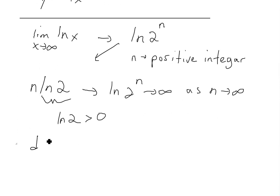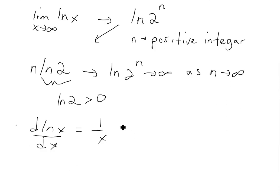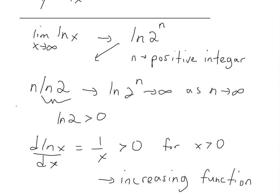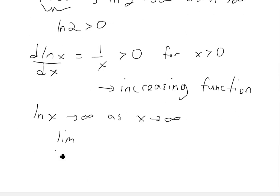We also know that the derivative of ln of x is 1 over x, and since the domain is x greater than zero, this derivative is greater than zero for all x greater than zero — meaning ln of x is an increasing function. Since it's always increasing and we showed it grows without bound, the limit as x approaches infinity of ln of x equals infinity.